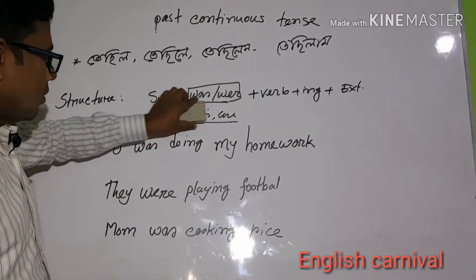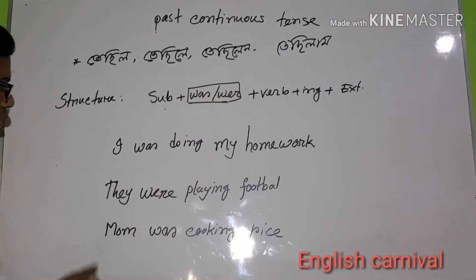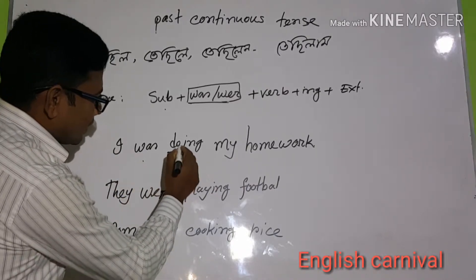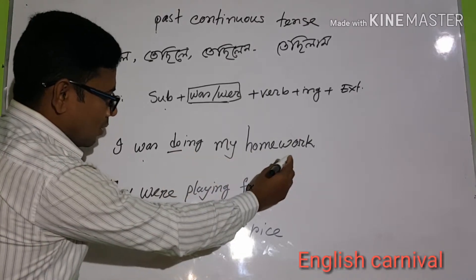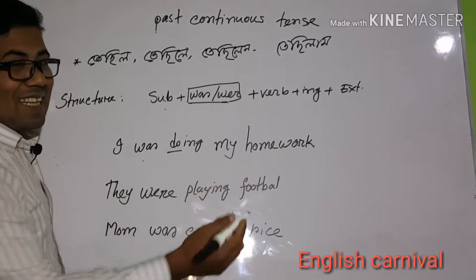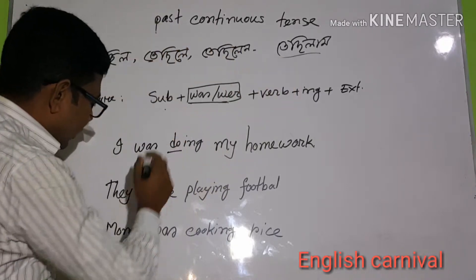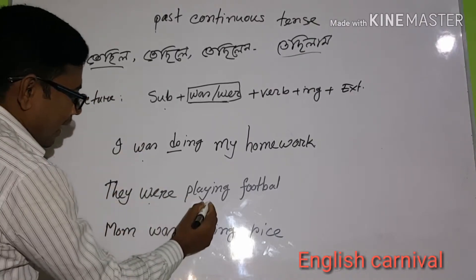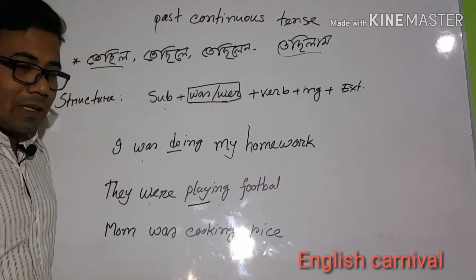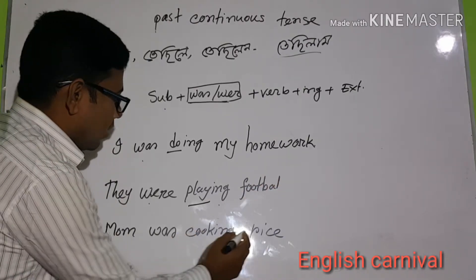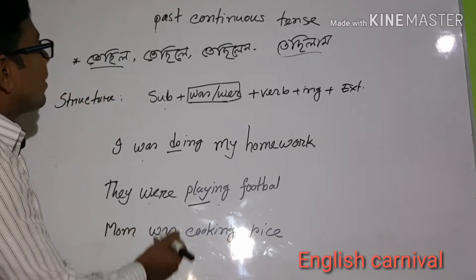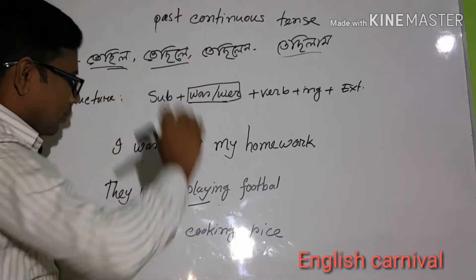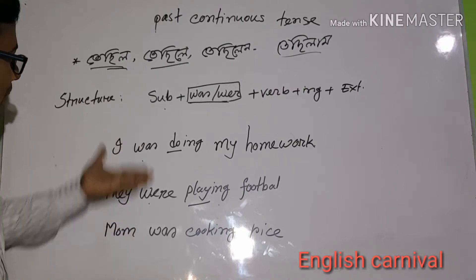Let's look at some examples. 'I was doing my homework.' 'They were playing football' — meaning they were engaged in football at that past moment. 'Mom was cooking rice' — meaning mom was in the process of cooking rice at that time. These are simple affirmative sentences in past continuous tense.